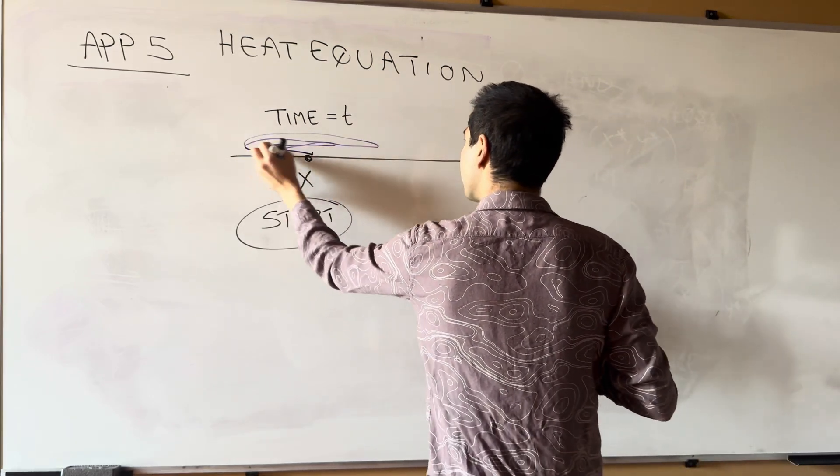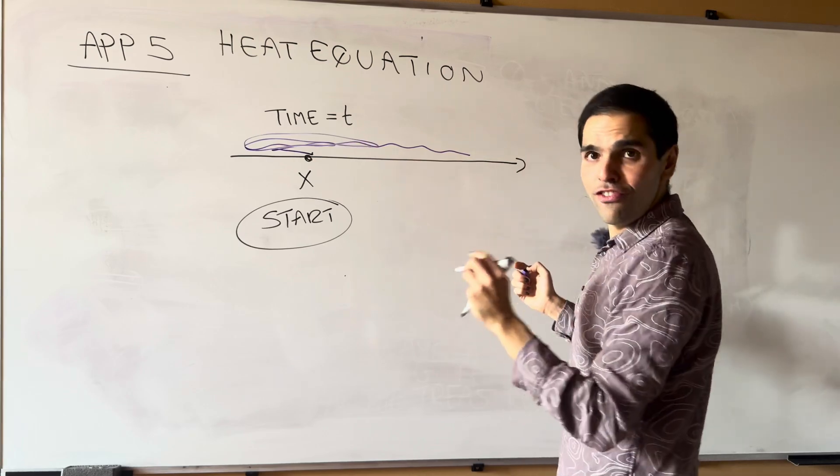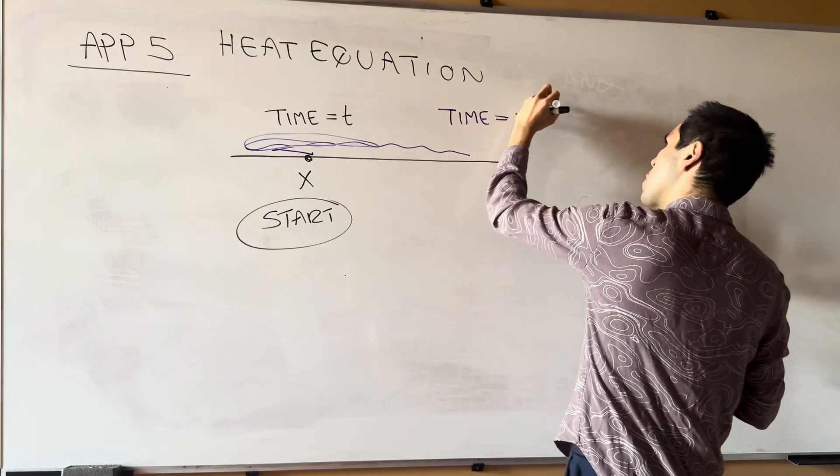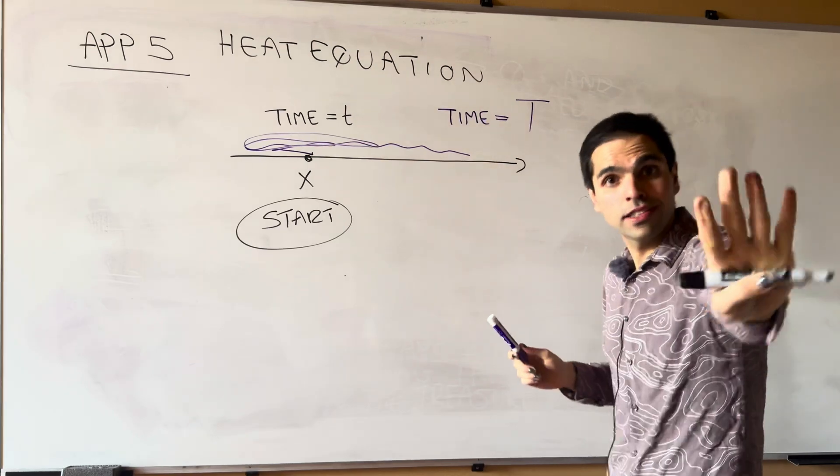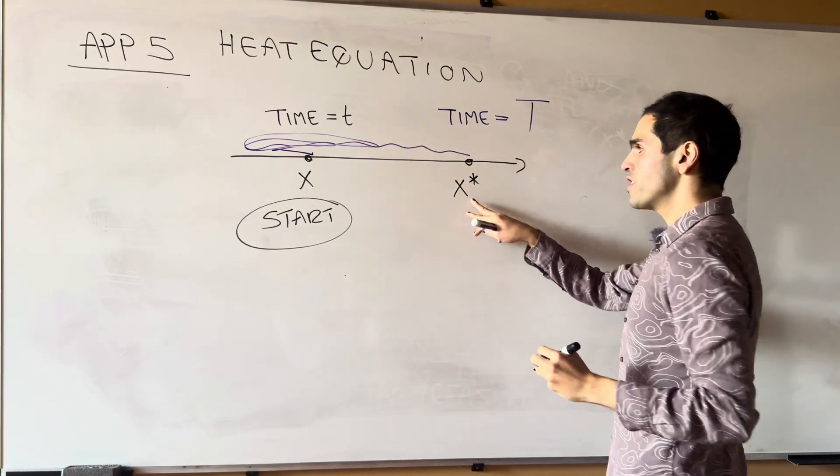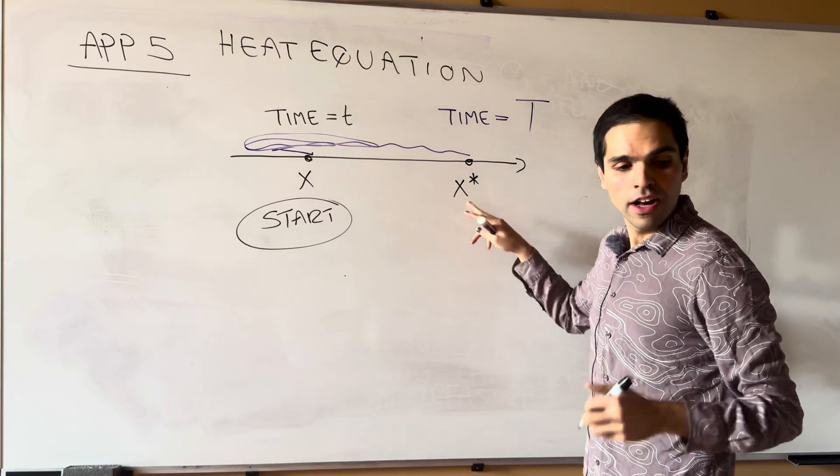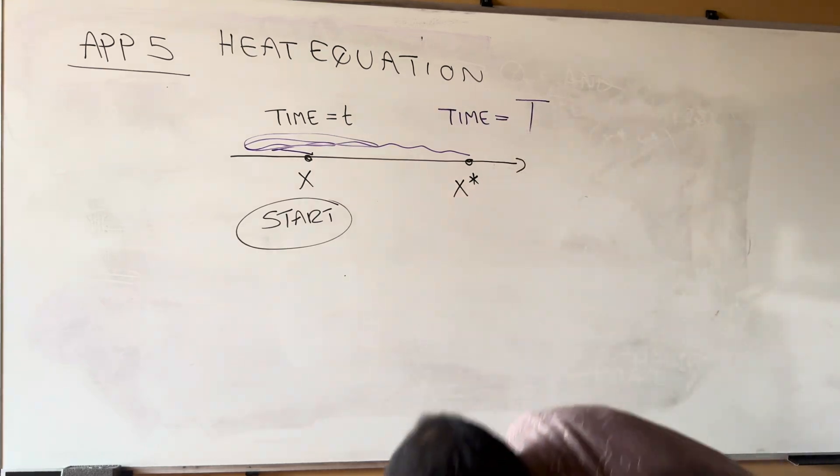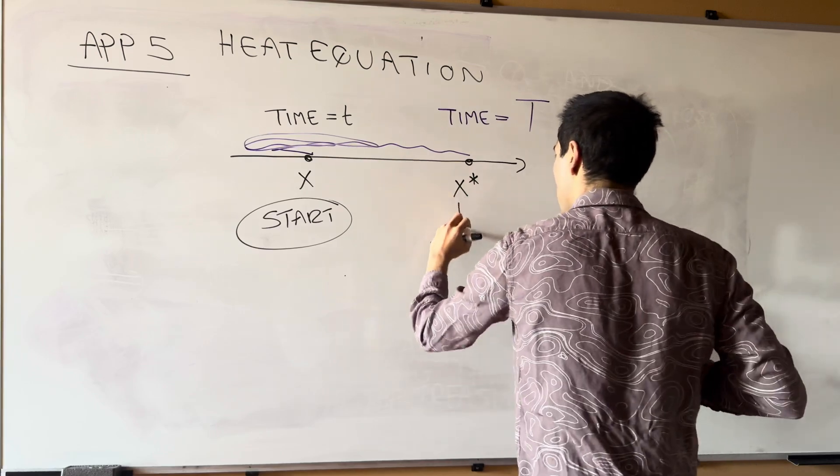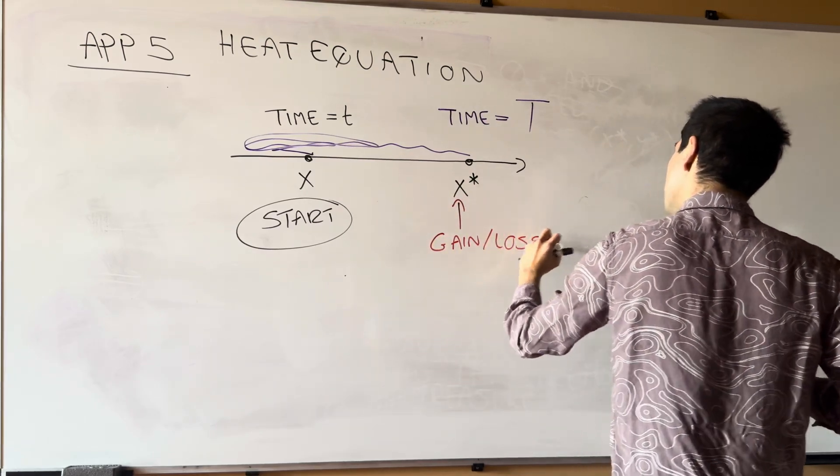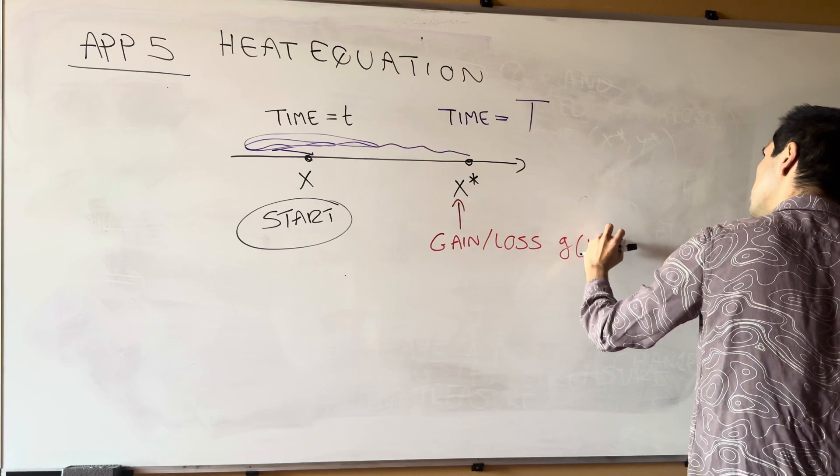And at the fixed time, capital T, I tell you, stop. And you stop at the random point x star. And I give you a gain or a loss, g of x star. Gain loss.